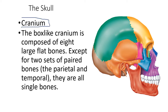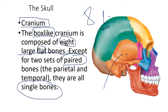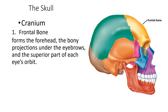The cranium is box-like and composed of eight large flat bones. There are two sets of paired bones, and the rest are single bones. The paired parts of the cranium are the parietal bones and the temporal bones — they have right and left pairs. We have eight total: two paired ones are the parietal and temporal bones, and the rest are single bones.